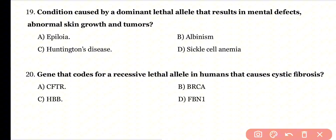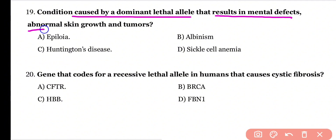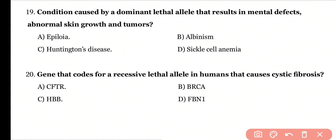Question 19: Which condition is caused by a dominant lethal allele that results in mental defects, abnormal skin growth, and tumors? Options: epilogia, albinism, Huntington's disease, or sickle cell anemia? Correct answer is option A. Epilogia is a mental disorder caused by a dominant lethal allele, and it also produces abnormal skin growth and tumors.